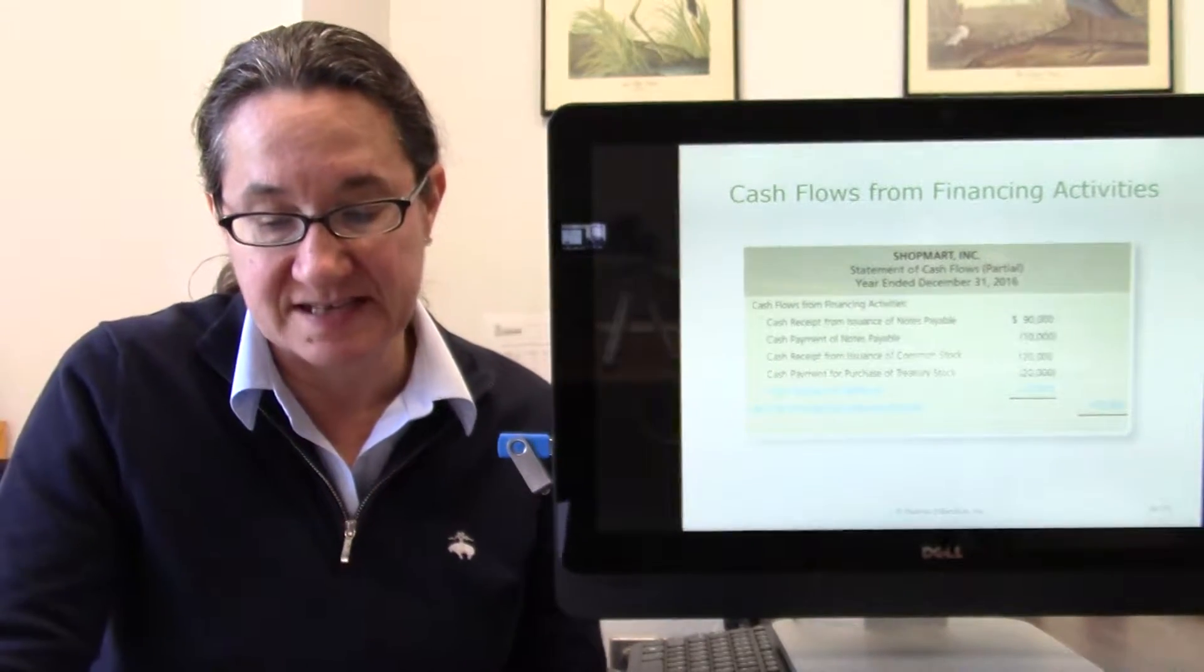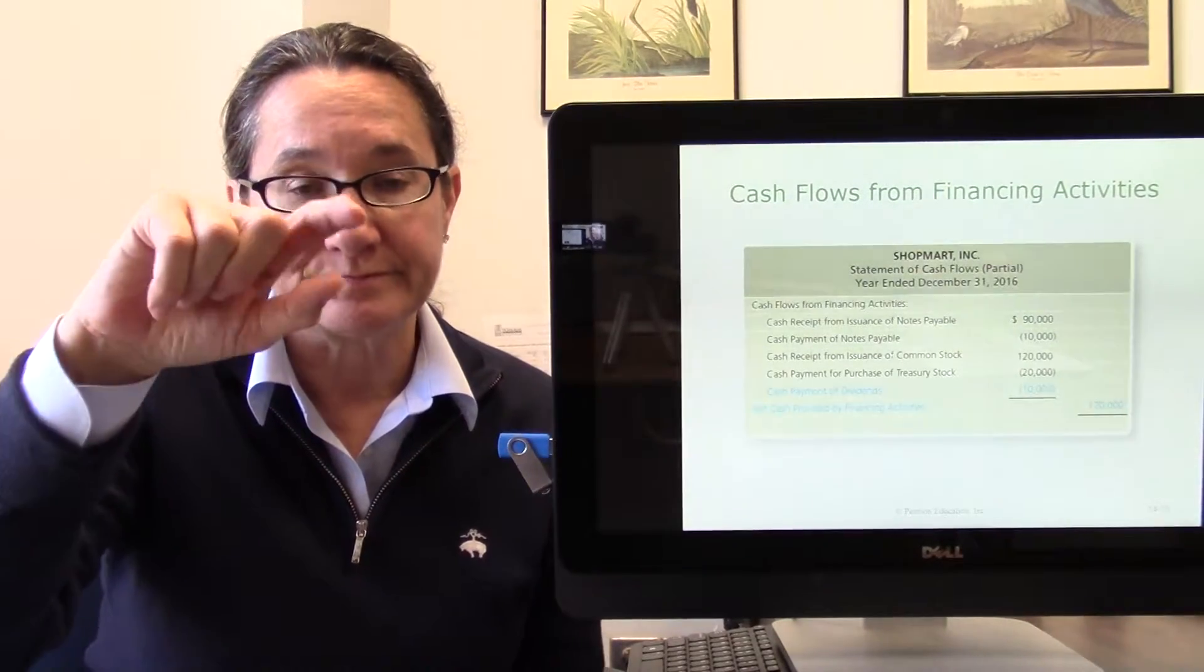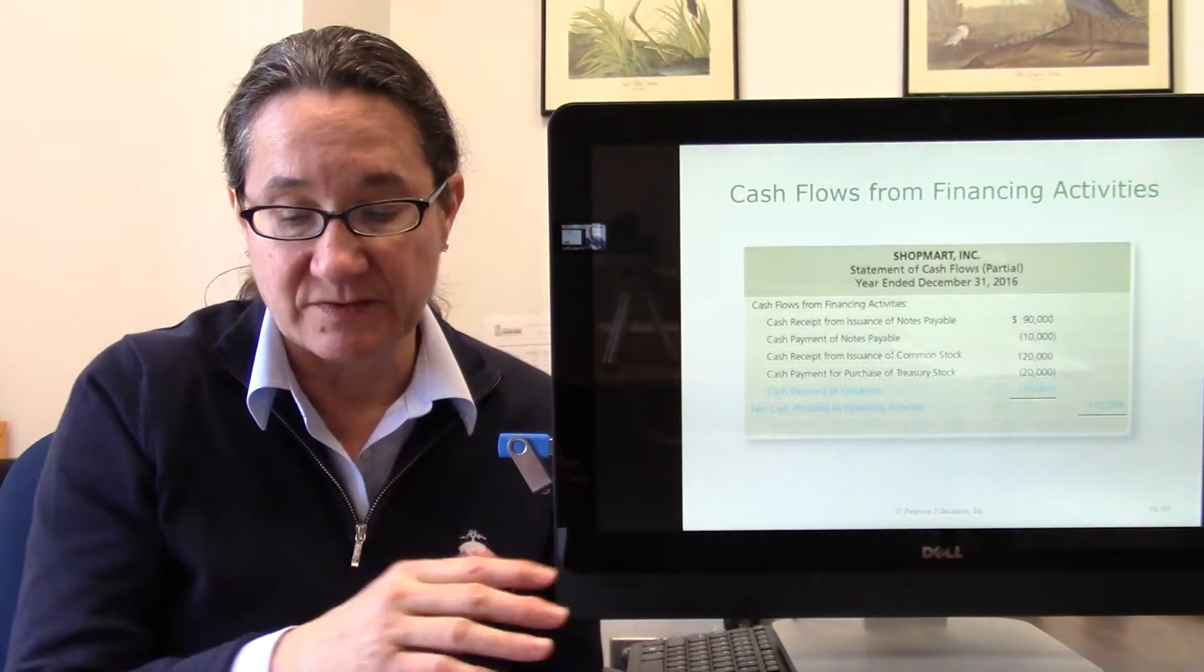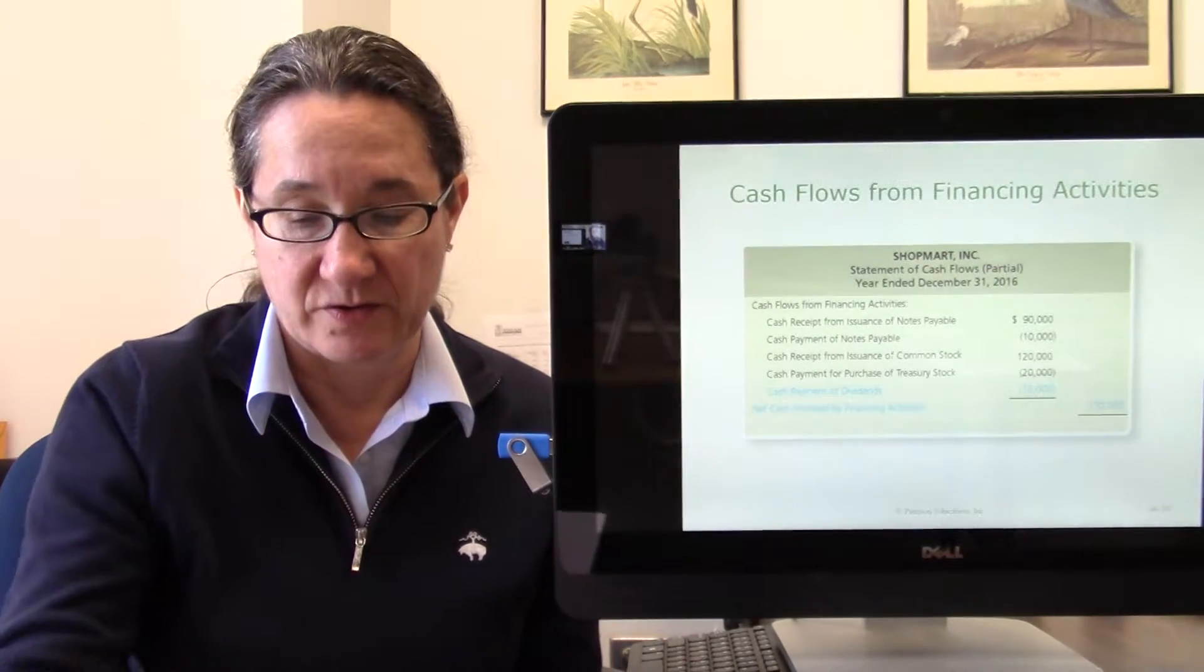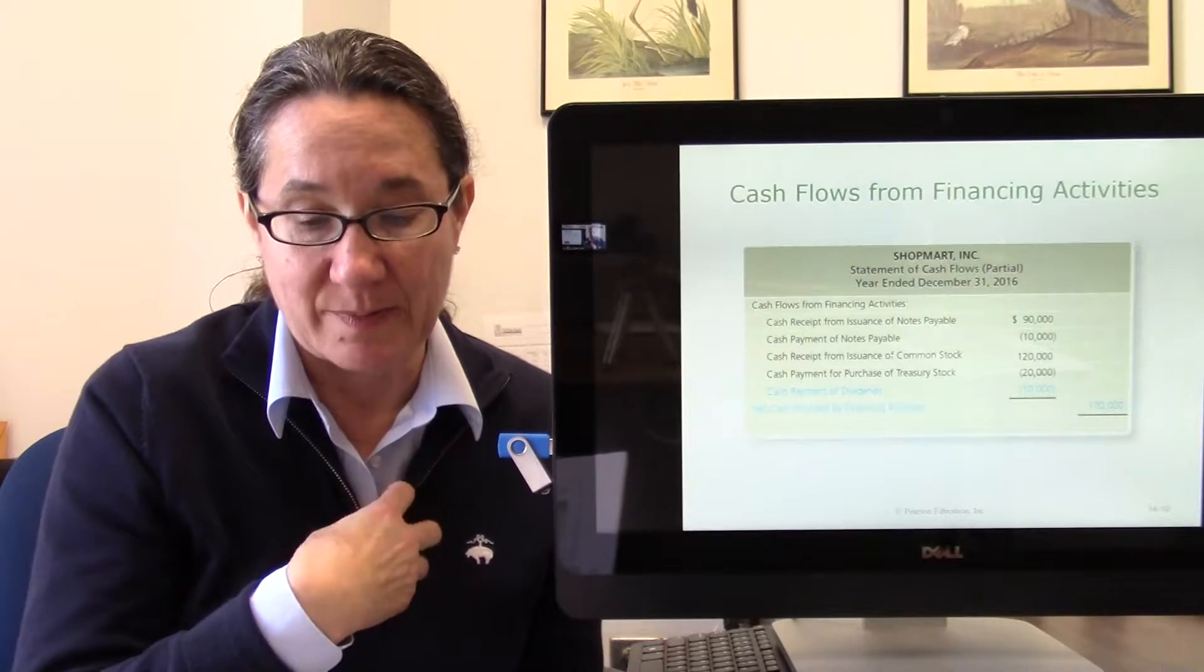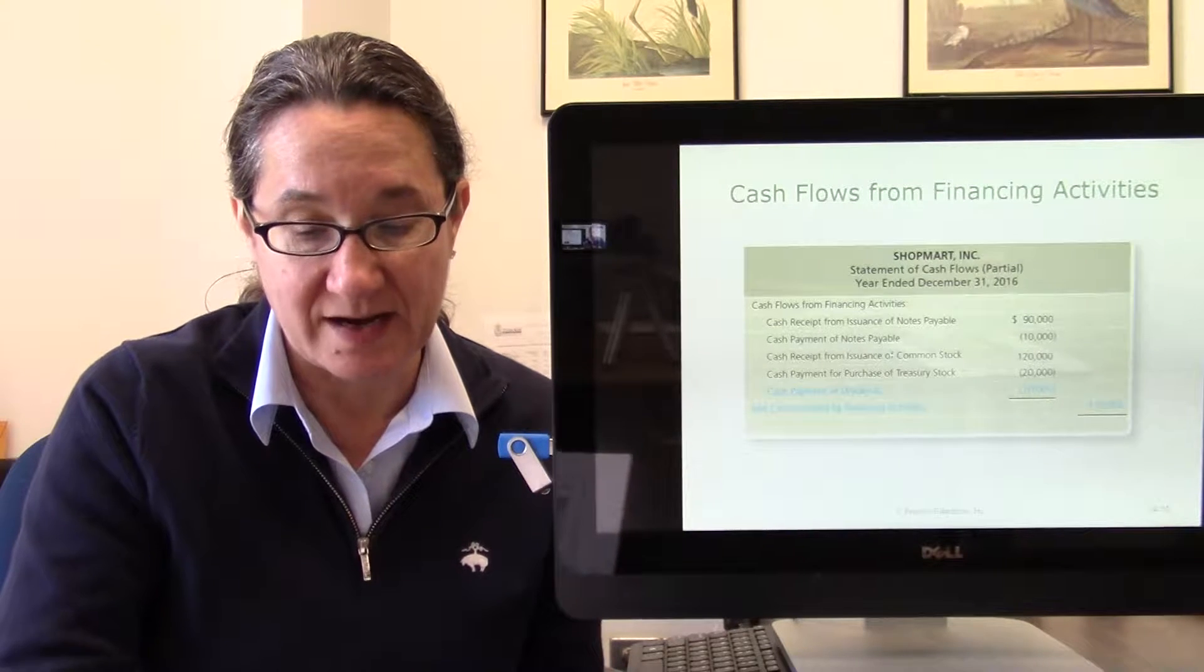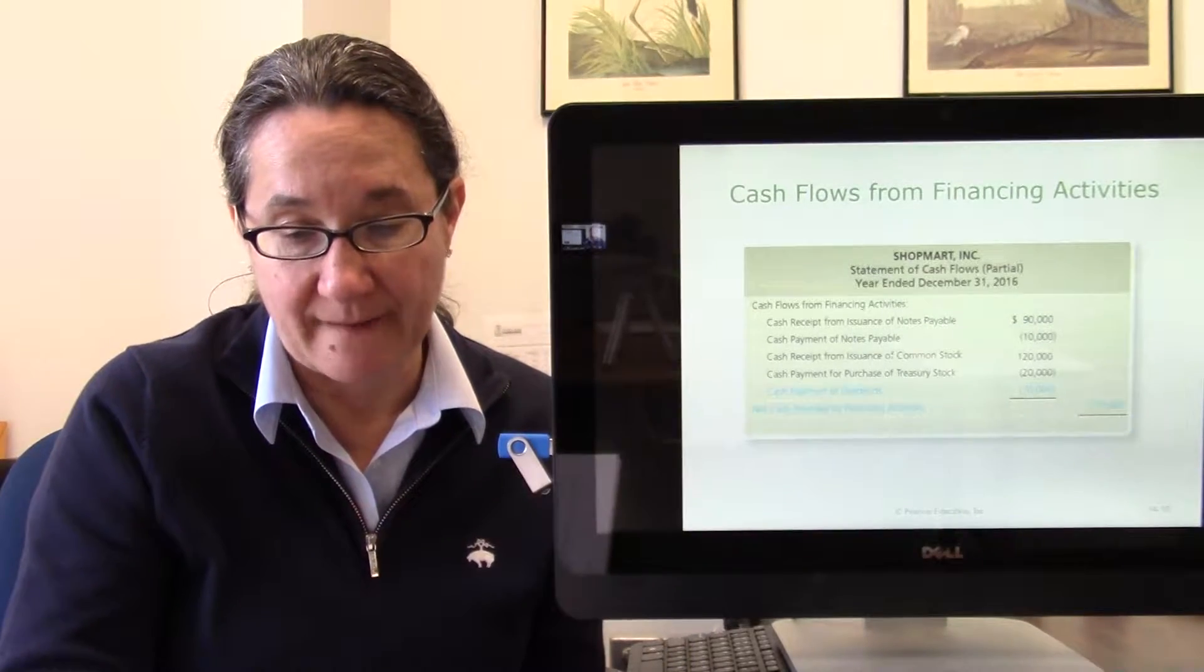Here's your cash flow from financing activities section of the cash flow statement. Remember, cash flow statement starts with net income, then you add and subtract your cash flows from operations, add and subtract your cash flows from investing which is the plant assets that you buy and sell, and then finally cash flows from financing activities which is how you finance your company. You might issue notes payable that brought cash in, pay off some notes payable which puts cash out, issue stock which brings cash in, purchase back some of your stock into treasury stock which means you paid cash out, and pay cash dividends.